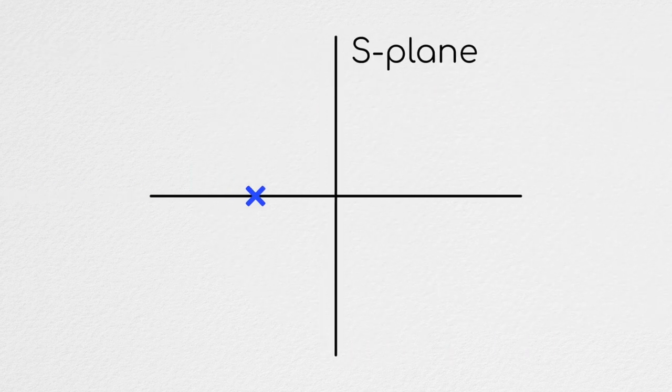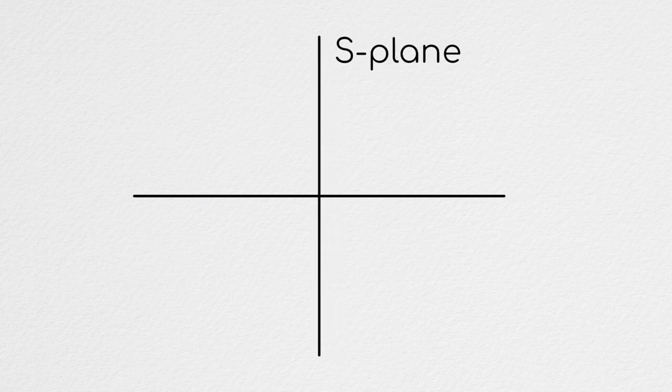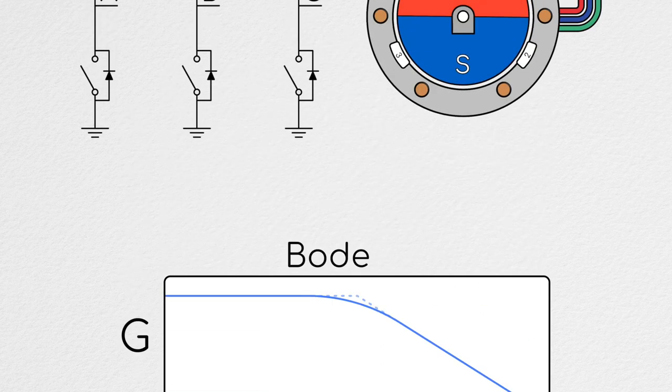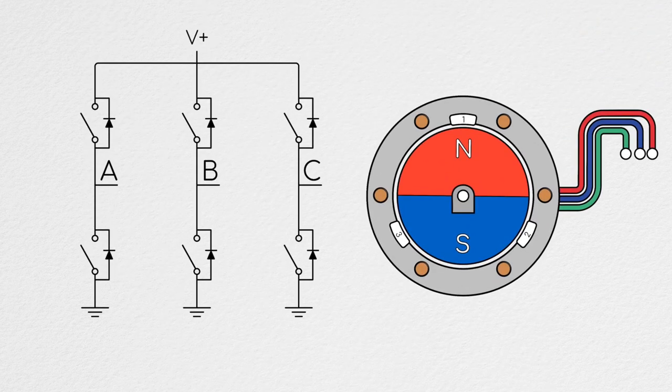We're going to talk more about designing the closed-loop controller, which will dictate the magnitude of these signals in a later episode when we get a bit more into the systems analysis of motors. But right now, we're going to talk a bit more about commutation and the different ways you can modulate your voltage.